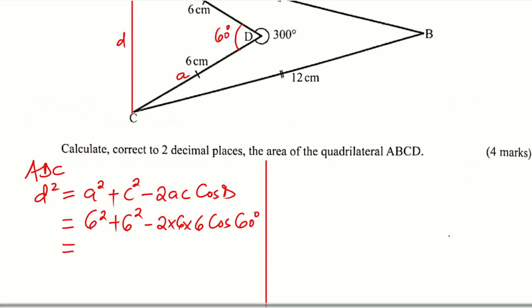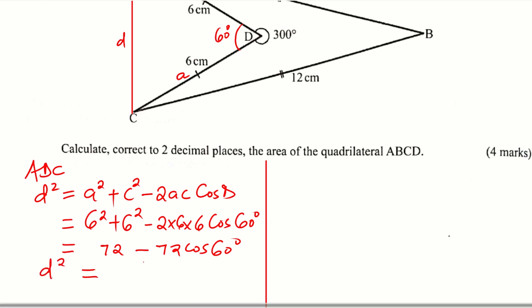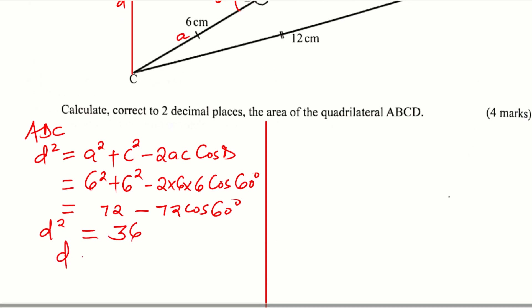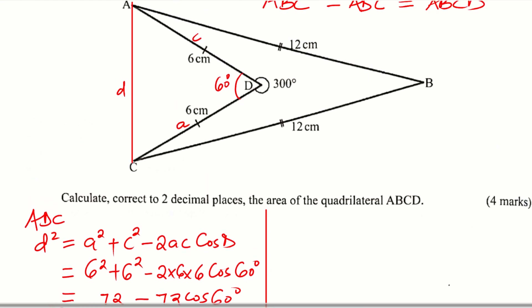So this gives 36 plus 36, which is 72, minus 72 cosine of 60 degrees. Working out 72 minus 72 cosine of 60 using a calculator, D squared equals 36. Getting the square root to obtain D, so D equals 6 centimeters. And this side is 6 centimeters and this side is 6 centimeters — so AC is 6 centimeters.